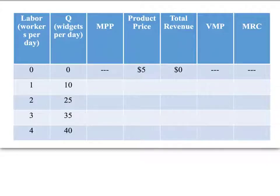Here's a chart that looks at labor — workers per day, quantity of widgets per day (that's the product), MPP, product price, total revenue, VMP, and MRC. I'm going to go slow so you can pause at any point to try to figure out the rest of this.